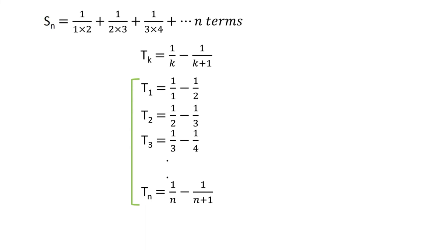If we add all the equations, the second term on the right-hand side of each equation gets cancelled by the first term on the right-hand side of the next equation.